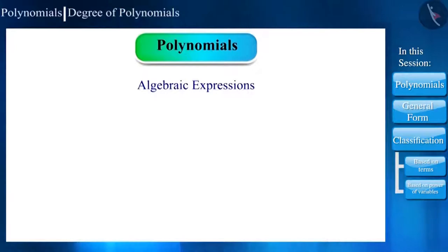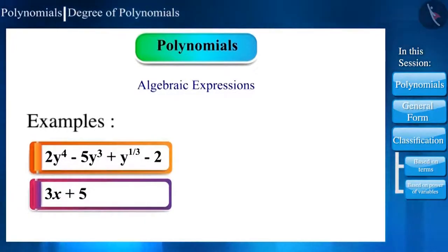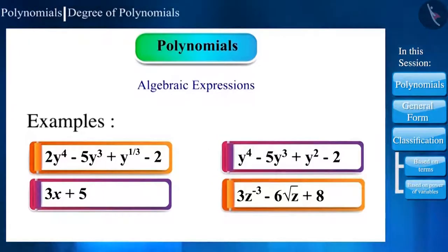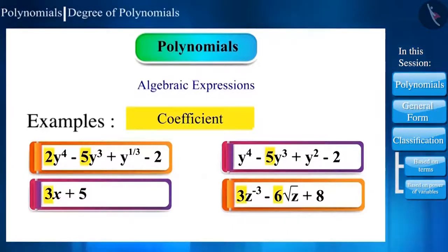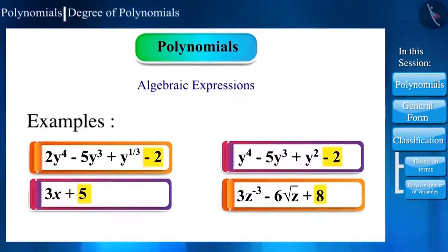In the last class, we learnt about algebraic expressions. These are a few examples. In the given expressions, x, y and z are called variables. The numbers associated with these variables are called coefficients. And the numbers whose values are fixed are called constants.